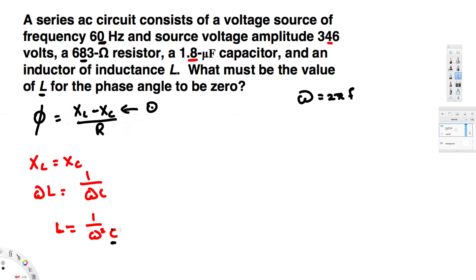L = 1/(ω²C). Instead of ω, I'm replacing it with 2πf, so this is going to be 1/[(2πf)²C]. Now let's plug in the values: 1 over [2π × 60 Hz]² times the capacitance.